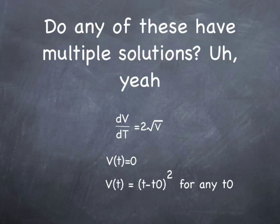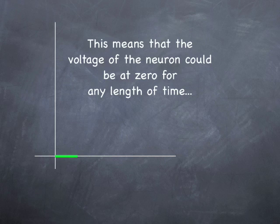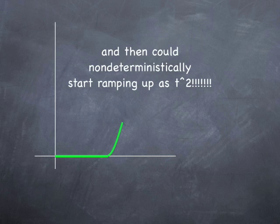It can stay zero forever, or it can just start randomly ramping up. Let me diagram it out here. The voltage of the neuron could be zero for any length of time. And then non-deterministically, it just starts ramping up, just picks a time and just starts ramping up.